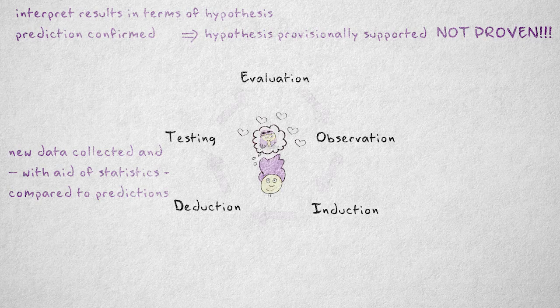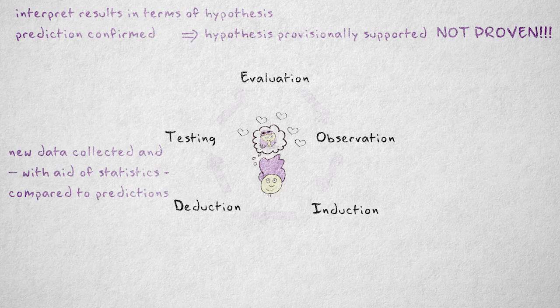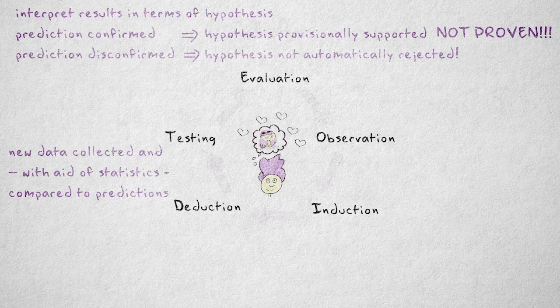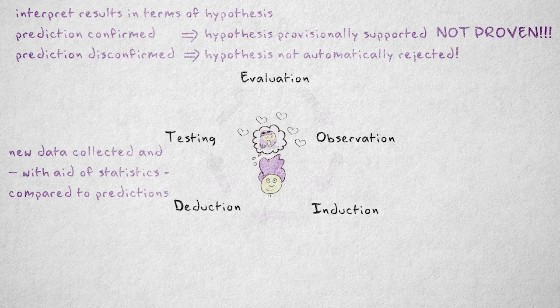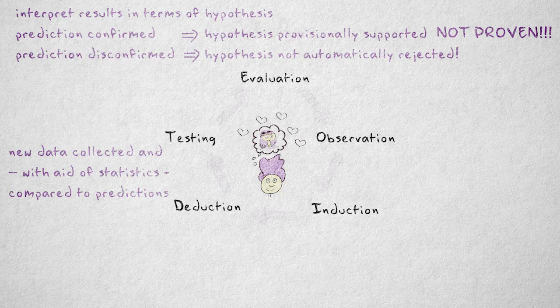In our example, the prediction was actually refuted. This doesn't mean we should reject our hypothesis outright. In many cases, there are plausible explanations for our failure to confirm. If these explanations have to do with the research setup, the hypothesis is preserved and investigated again, but with a better research design.